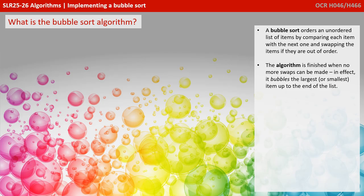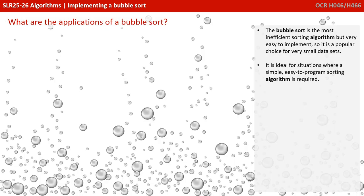A bubble sort orders an unordered list of items by comparing each item with the next one and swapping the items if they're out of order. The algorithm is finished when no more swaps can be made. In effect, it bubbles the largest or smallest item up to the end of the list. The bubble sort is the most inefficient sorting algorithm, but very easy to implement, so it's a popular choice for very small data sets. It's ideal for situations where a simple, easy-to-program sorting algorithm is required.